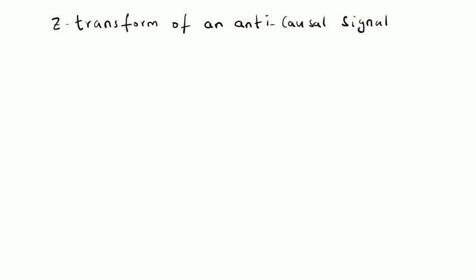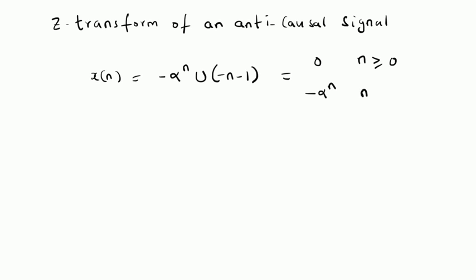That is, x[n] is defined as a possible anti-causal signal: x[n] = -α^n · u[-n-1]. This is obviously equal to 0 for n greater than or equal to 0, and equal to -α^n for values of n less than 0.